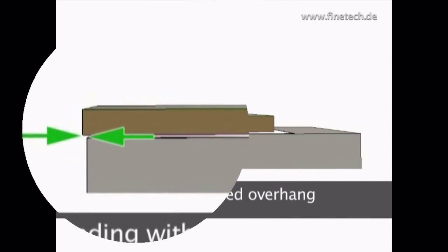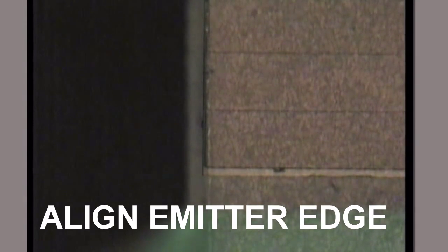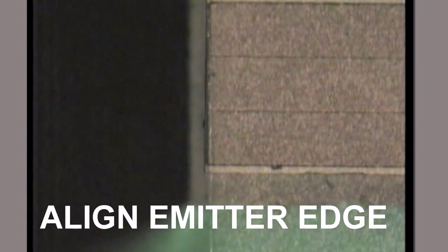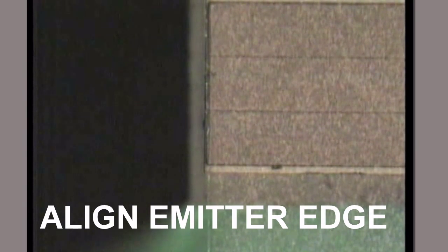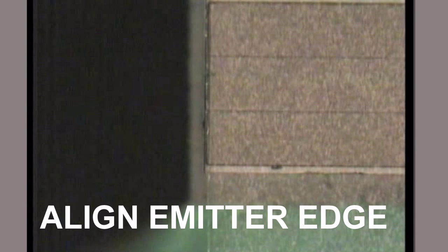So, how is this alignment performed? Using a patented split-field vision system, both ends of the bar are aligned to the C-mount using the highest optical power. The fact that these optics can be translated along the laser bar is a unique Finetech feature.